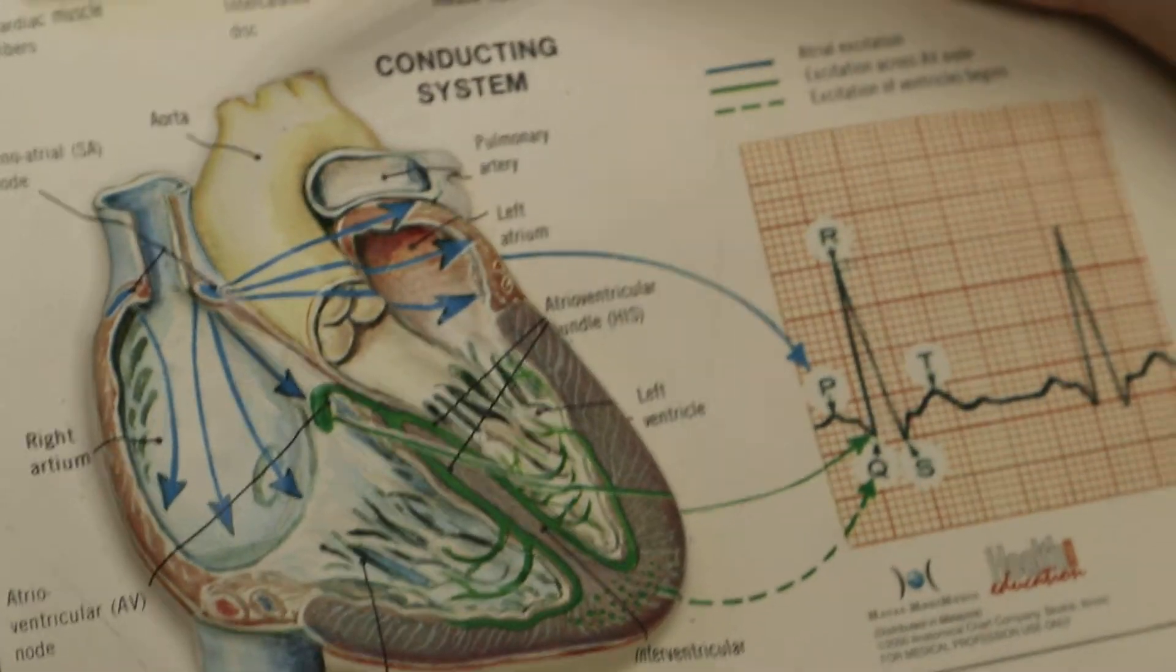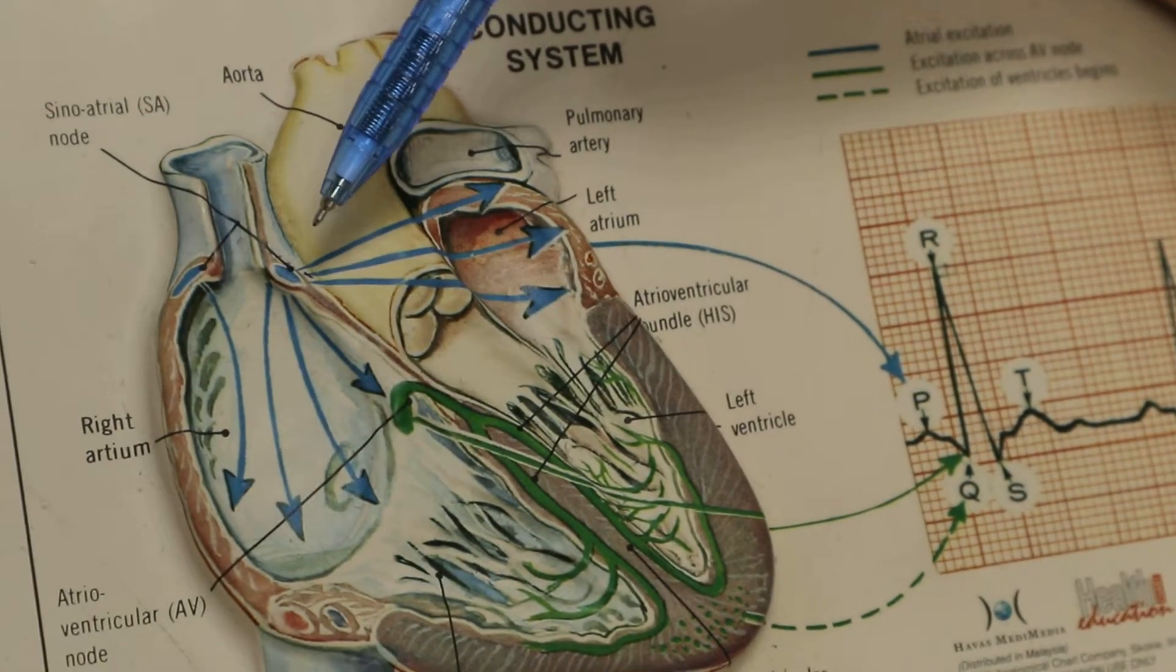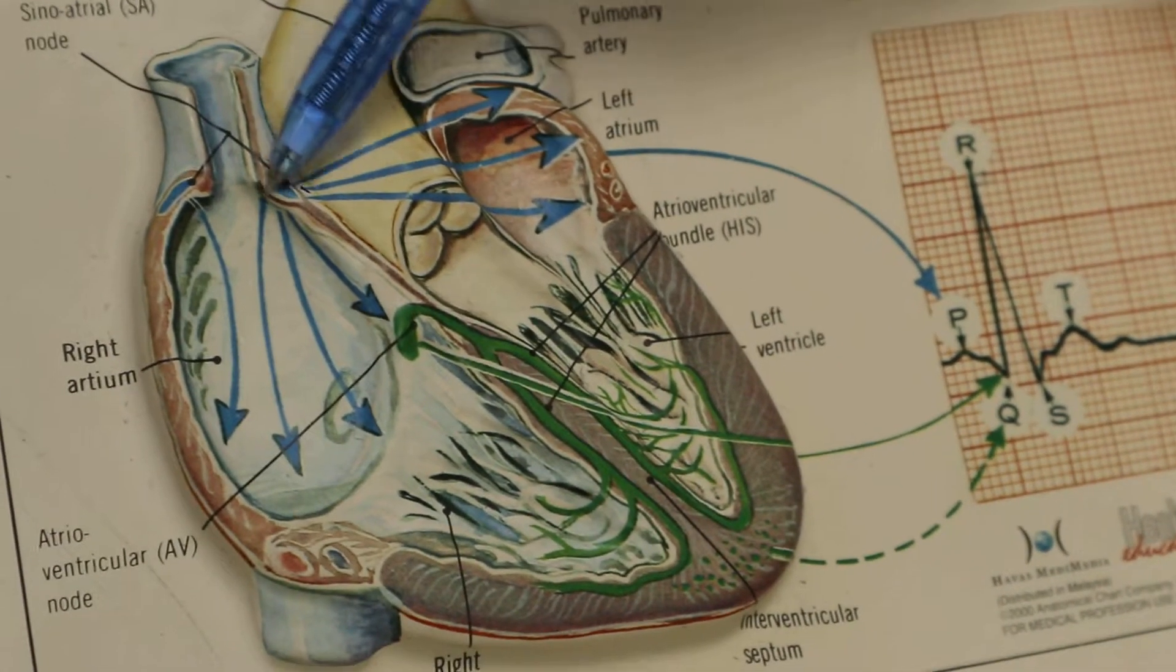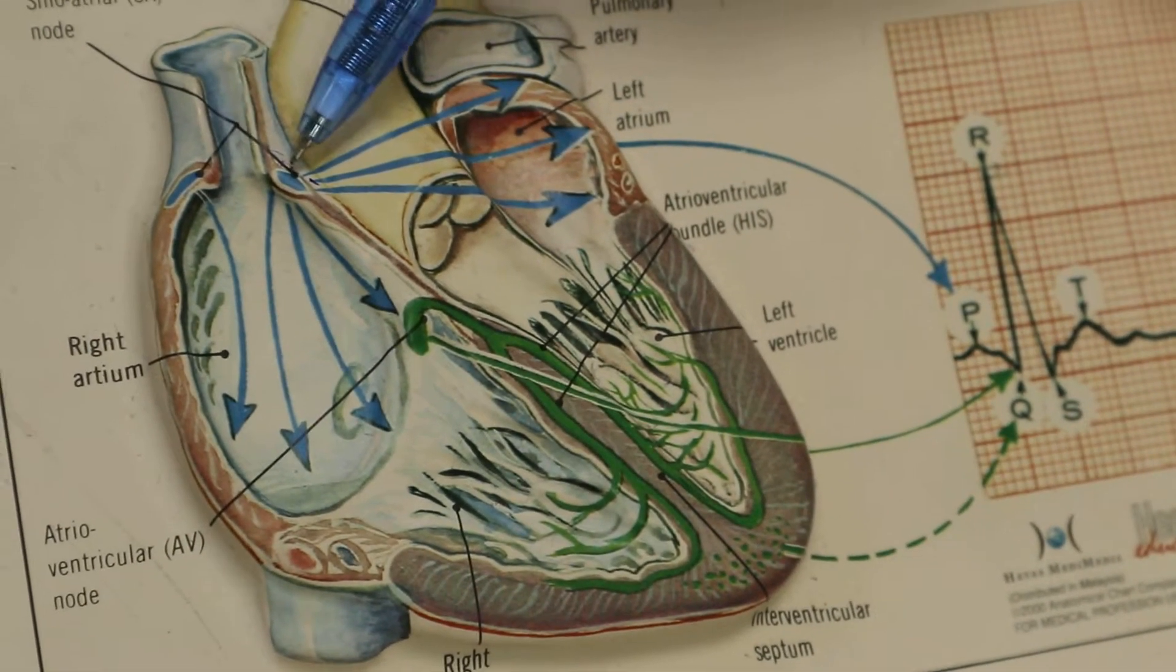The conduction system of the heart is important in synchronizing its cells. The conduction system starts from this node here, known as the sinoatrial node, also called the SA node.